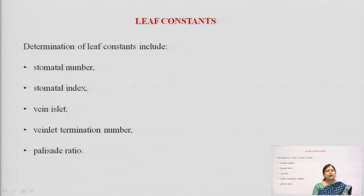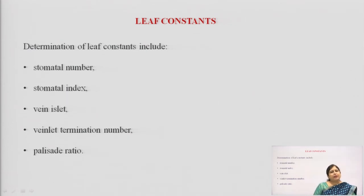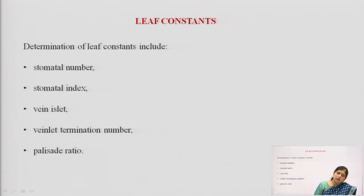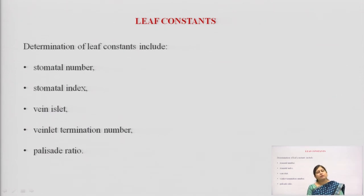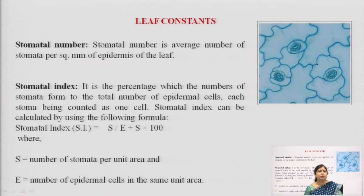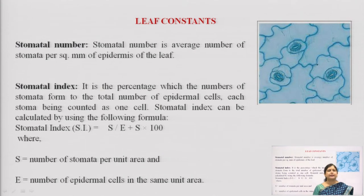The second part is studying leaf constants, specifically for drugs which are leafy in nature. The majority of herbal drugs use leaves as the drug, so this part of the study is important. As a pharmacognosist you should know these terminologies and how the studies are performed. We will first look at the definitions and then the method of performing the estimation.